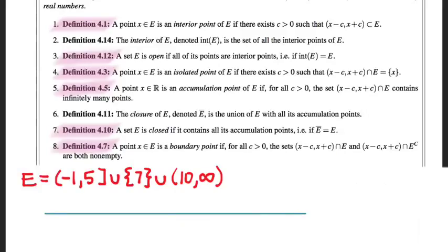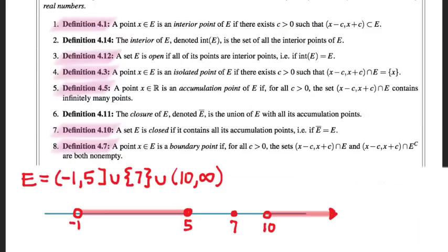Here's an example of a subset of real numbers that's made up of a union of three different pieces. Let me diagram out this set. The picture here is that everything on this number line that's shaded in red is part of my set E. I want to use this set as my guinea pig to talk about these four different types of points that we're concerned with.